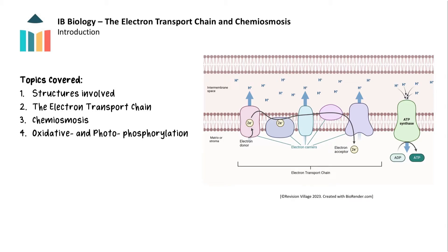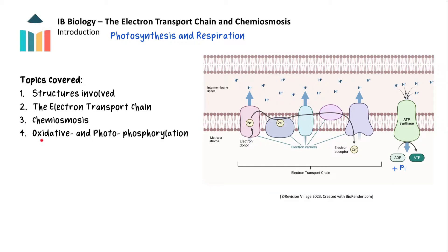This video covers the key concepts of the electron transport chain and chemiosmosis, which are important in both photosynthesis and respiration as they play a crucial role in the production of ATP from ADP and inorganic phosphate. We will look at the structures involved, the processes of the electron transport chain and chemiosmosis, and the difference between oxidative and photophosphorylation.